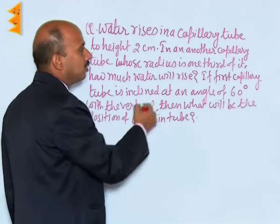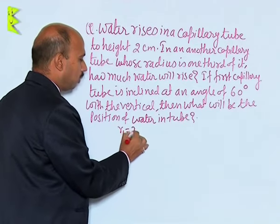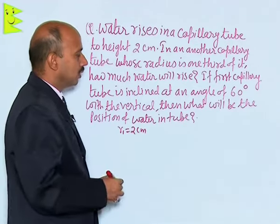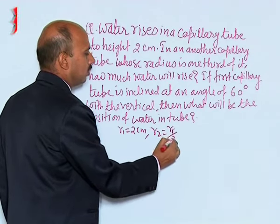See here the first part. There are two capillary tubes. One has got radius r1 equal to 2 centimeters, and r2 equal to r1 by 3, that is given in the question.